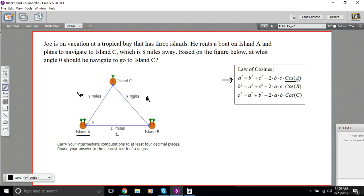So we take side A, which is 9, and square it, and we set that equal to side B, which is 8, and square it, and side C, which is 11, and square it. And then we subtract 2 times B times C, and that all gets multiplied by the cosine of A.